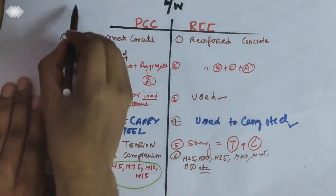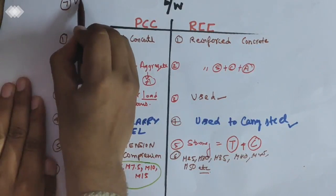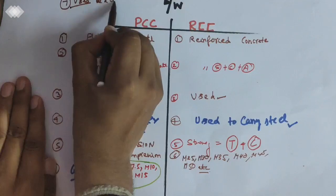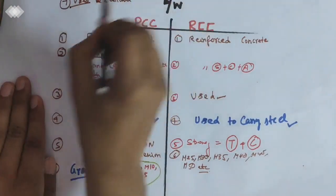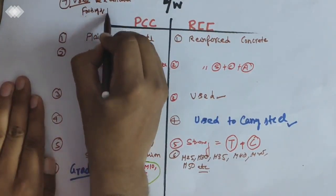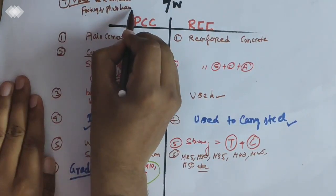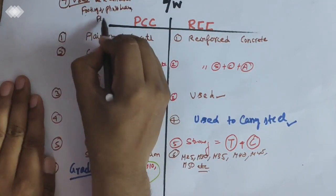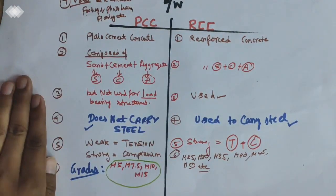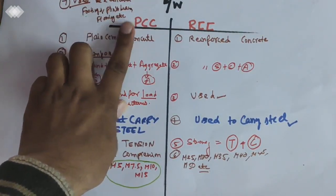Now if we talk about the seventh point, we will add the uses. PCC is used as bed concrete for footing purposes, in place of lintel beam bed, and also flooring types of purposes, etc.